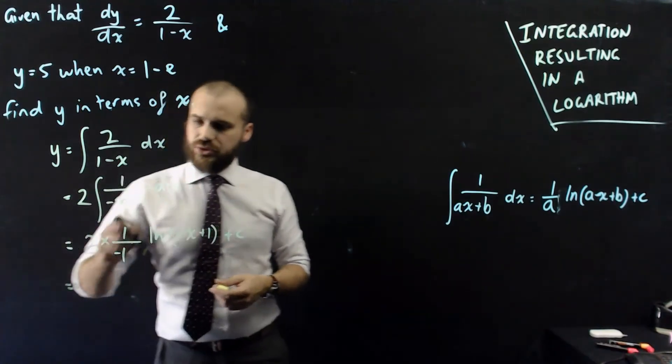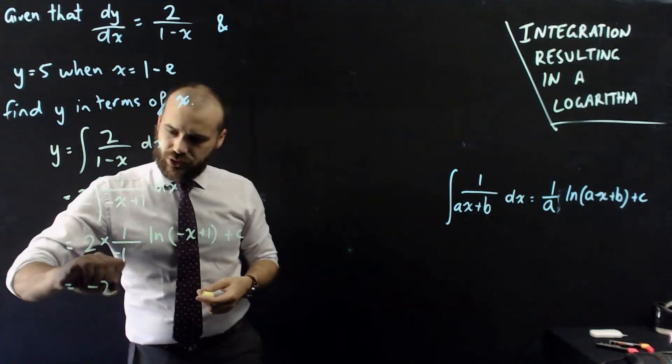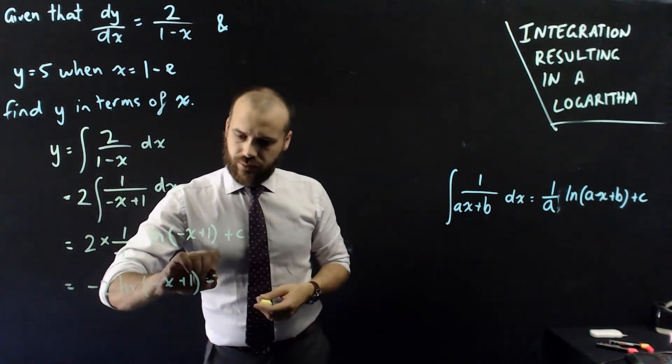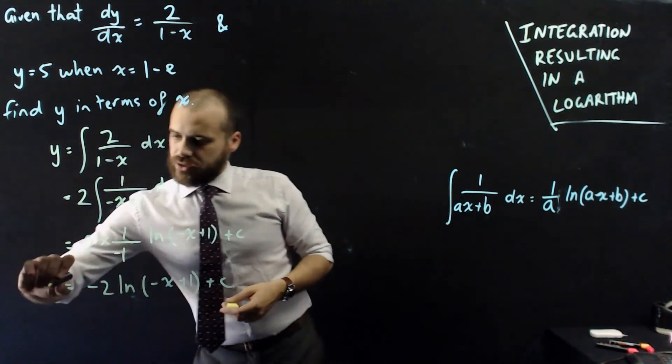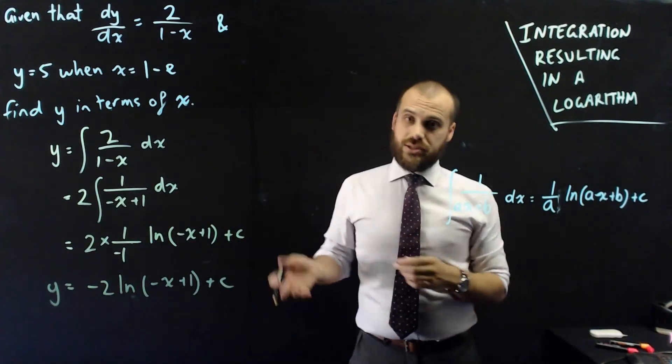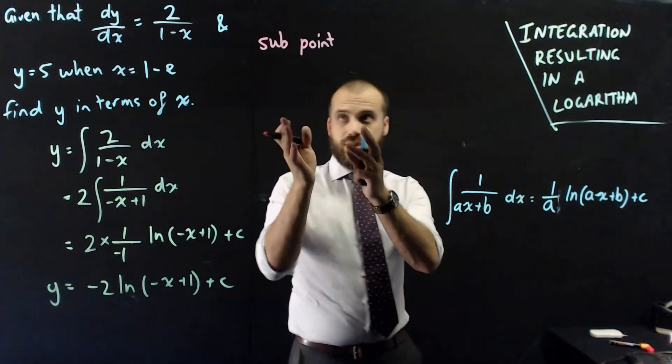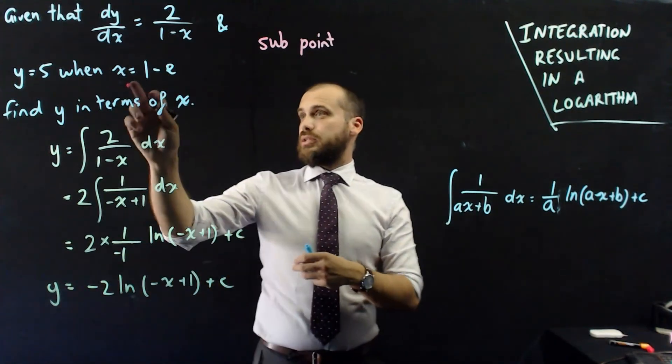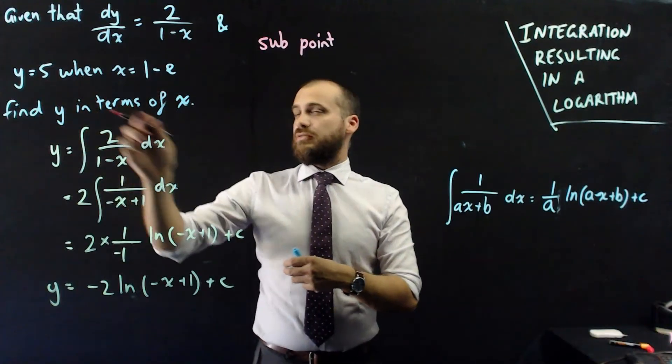Okay, that's going to be 2 times negative 1, which is negative 2, ln, negative x plus 1, plus c. So, that's y. Now, I've got that plus c there. The whole point of this is to try to get rid of the plus c. So, to do that, I've got to sub a point into my equation, and the point is 1 minus e and 5.